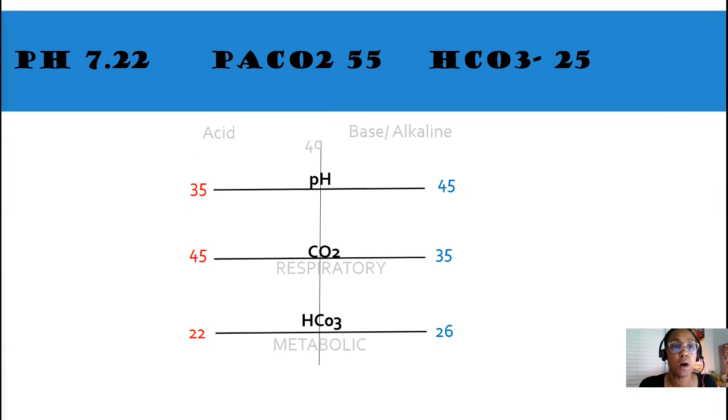Here's our first ABG. Our pH is 7.22. Our CO2 is 55. And our bicarb, HCO3, is 25. Basically, you just have to plot the numbers on the graph. Here's our pH. It's off the line, out of range. Next, our CO2. Also, out of range on the acid side. And then, finally, our bicarb, which is on the line. It's still in range.